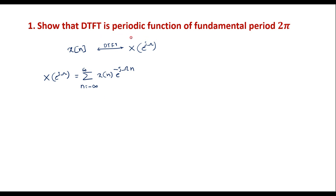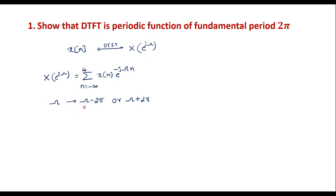Here, DTFT is a periodic function of fundamental period 2π — it means that at every 2π, the DTFT function repeats. Let us try to prove that. We know that the frequency is ω, so at every ω − 2π the same signal will repeat. We will try to prove this. We can take either ω − 2π or ω + 2π. I will take ω − 2π, so replace ω by ω − 2π.